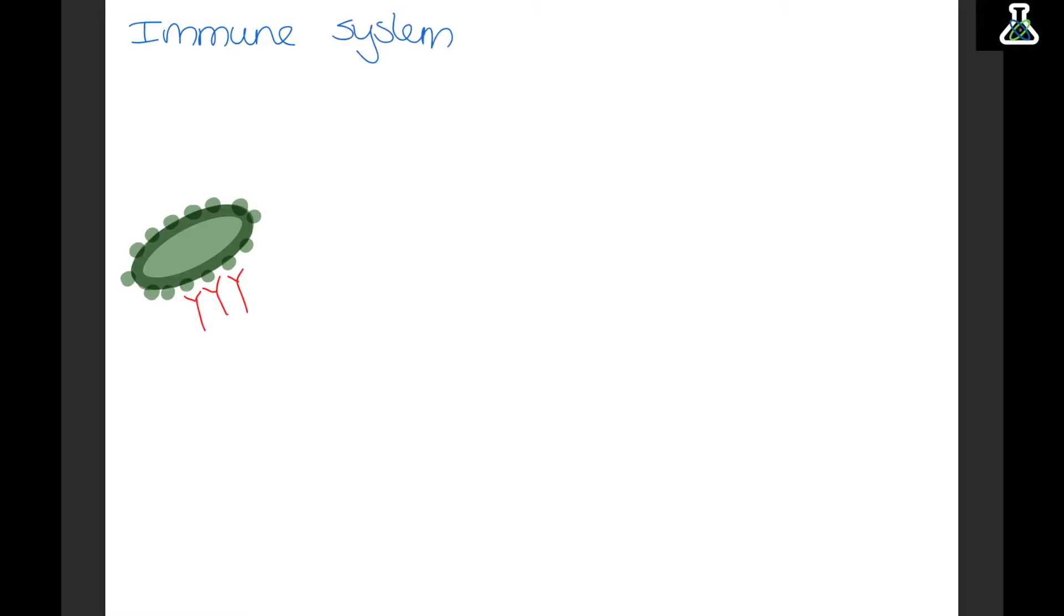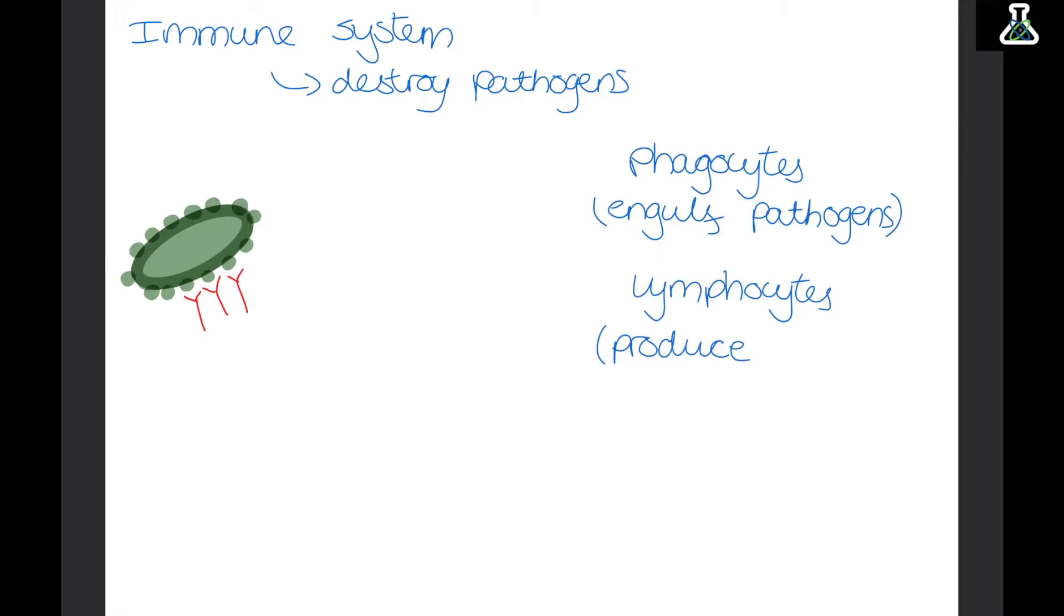Now it's the immune system's job to destroy pathogens. The immune system is made up of our white blood cells. And there are two main types of white blood cells we need to know. The first are phagocytes. Now their job is to go around engulfing pathogens. So they go around and swallow the pathogen whole. Now the second type are lymphocytes. And it's their job to produce antibodies.